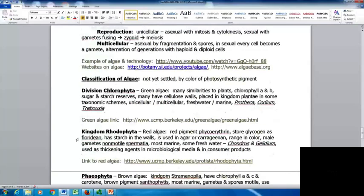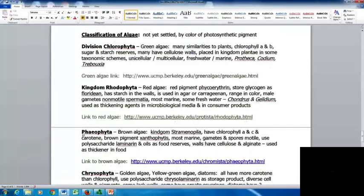In the division Chlorophyta, the green algae have lots of similarities to plants. They have chlorophyll A and B, sugar and starch reserves, lots have cellulose walls. They were placed in the kingdom Plantae in some taxonomic schemes. They can be unicellular or multicellular, freshwater or marine. Examples are Prototheca, Codium, and Ulva.